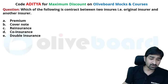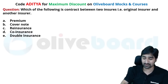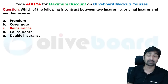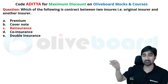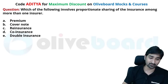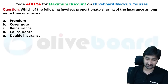Which of the following is a contract between the original insurer and another insurer? One insurance company taking insurance from another insurance company is called reinsurance.